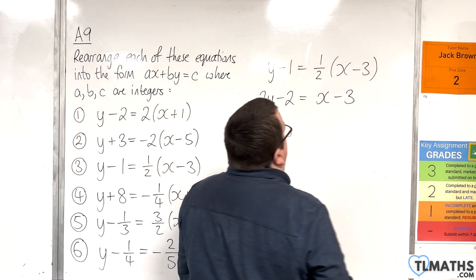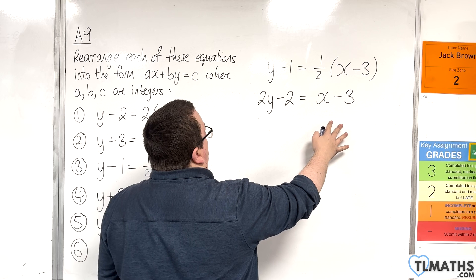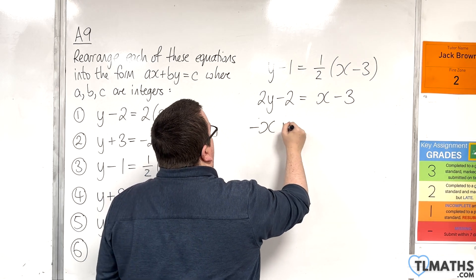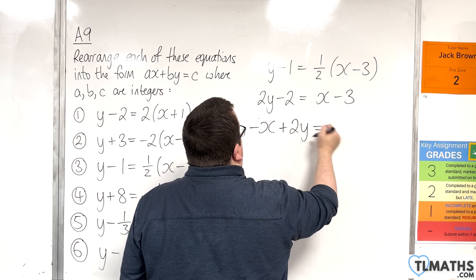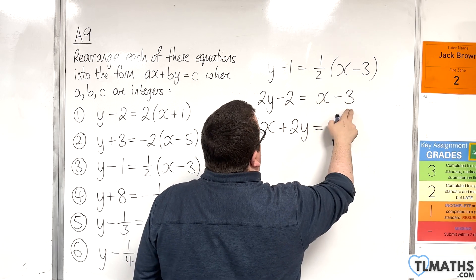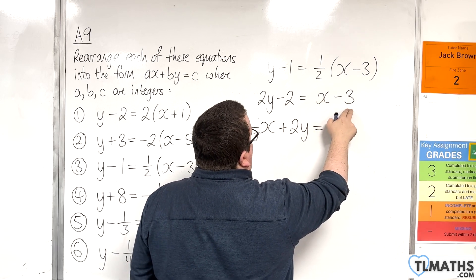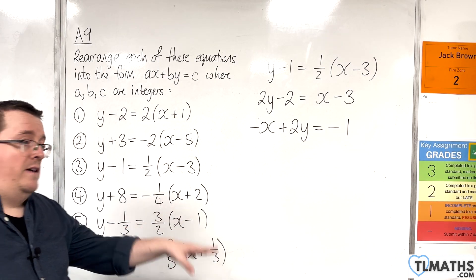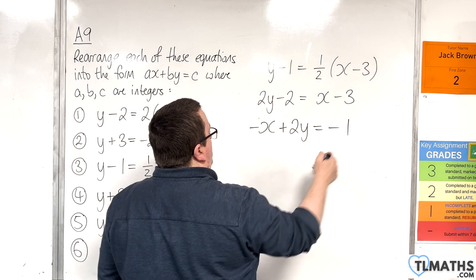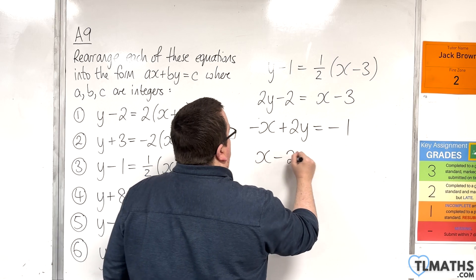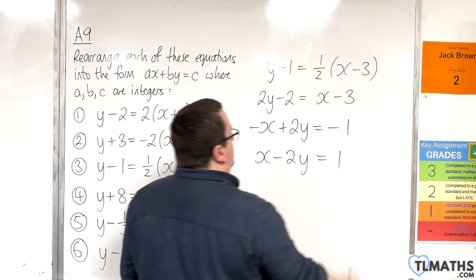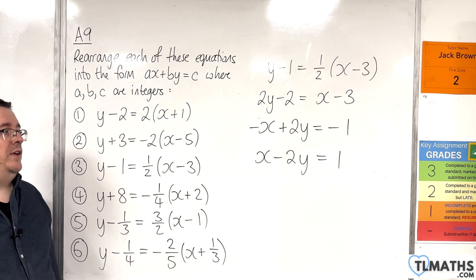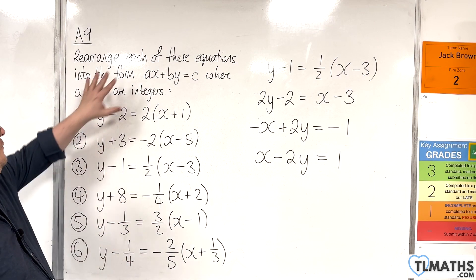Then you can rearrange into the form you want. If I subtract x from both sides and keep the 2y where it is, then add 2 to both sides, we get minus 3 plus 2 which is minus 1. So we have minus x plus 2y equals minus 1. If you don't like the minus signs, multiply through by minus 1 to get x take away 2y equals 1. That's a different form of the same equation which fits the bill.